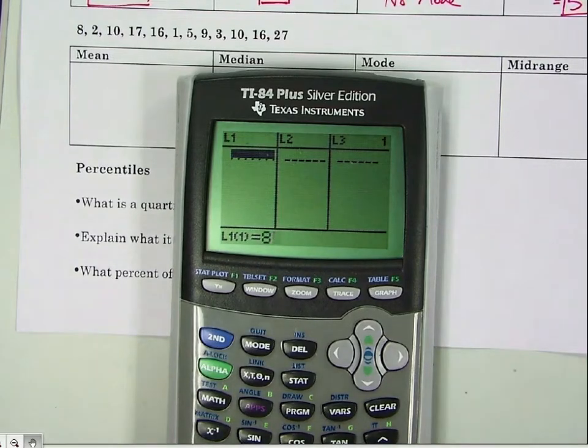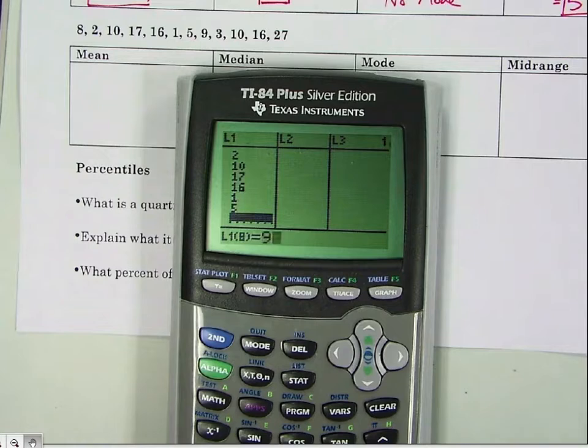So we've got 8, then you just hit enter, 2, 10, 17, 16, 1, 5, 9, 3, 10, 16, and 27.